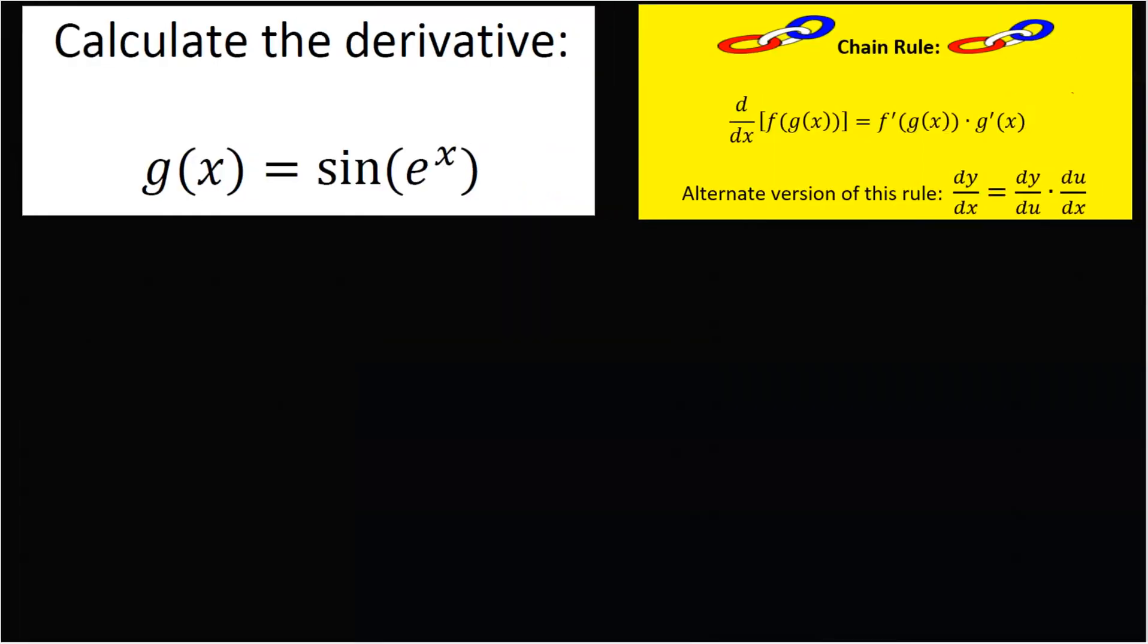Okay, so the chain rule says the derivative of a composite function is going to equal the derivative of the outside function multiplied by the derivative of the inside function. So you have two parts there.